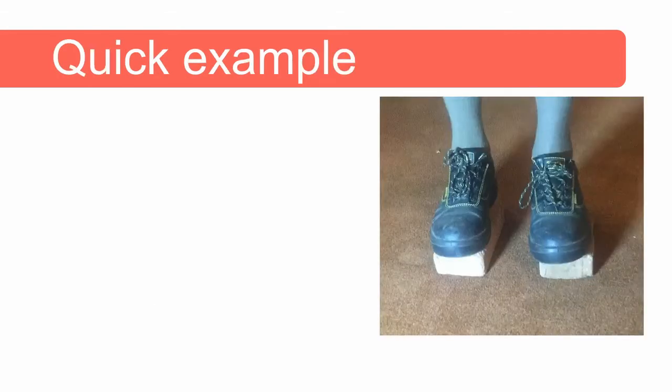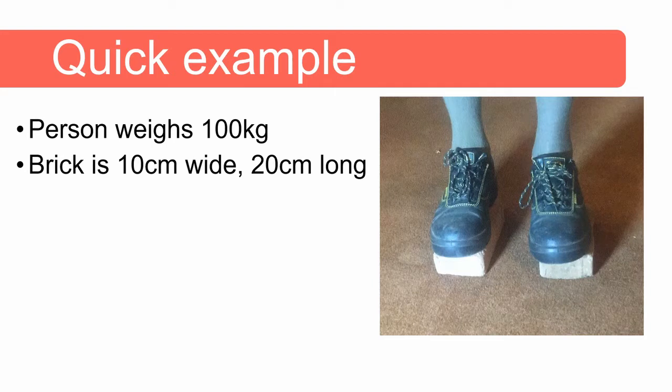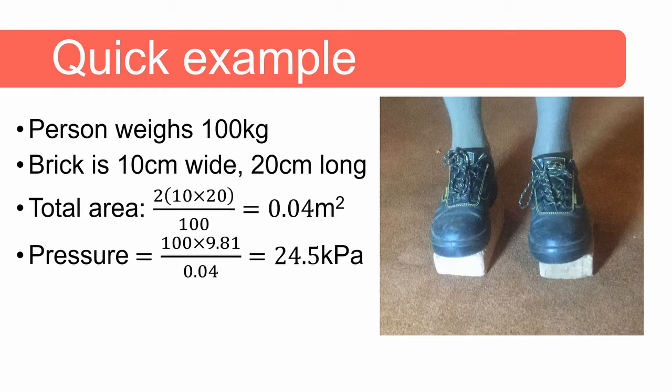Now let's have a quick example. Say a person with a mass of 100 kilograms stand on two bricks. Each brick is 10 centimeter wide and 20 centimeter long and the total area of both bricks is 0.04 meter squared and then the pressure that these bricks are exerting on the ground is 24.5 kilopascal.